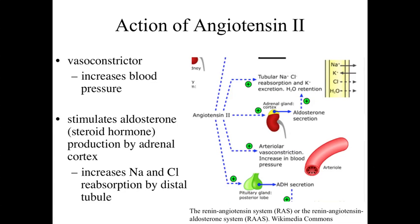Angiotensin II is a vasoconstrictor. Consider what started this whole process: below-normal blood volume and below-normal blood pressure triggered the release of renin. Through this process, we've activated angiotensin II, which causes blood vessels to constrict, having the overall effect of increasing blood pressure.